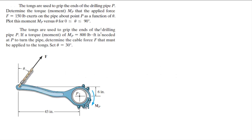For more videos visit forthesakeofducation.com. We're doing these two problems at the same time, where we have tongs that are used to grip the ends of a drilling pipe P. They want you to find the moment that the applied force F exerts on the pipe about P as a function of theta, and for the second problem, find what the force has to be to create this moment.